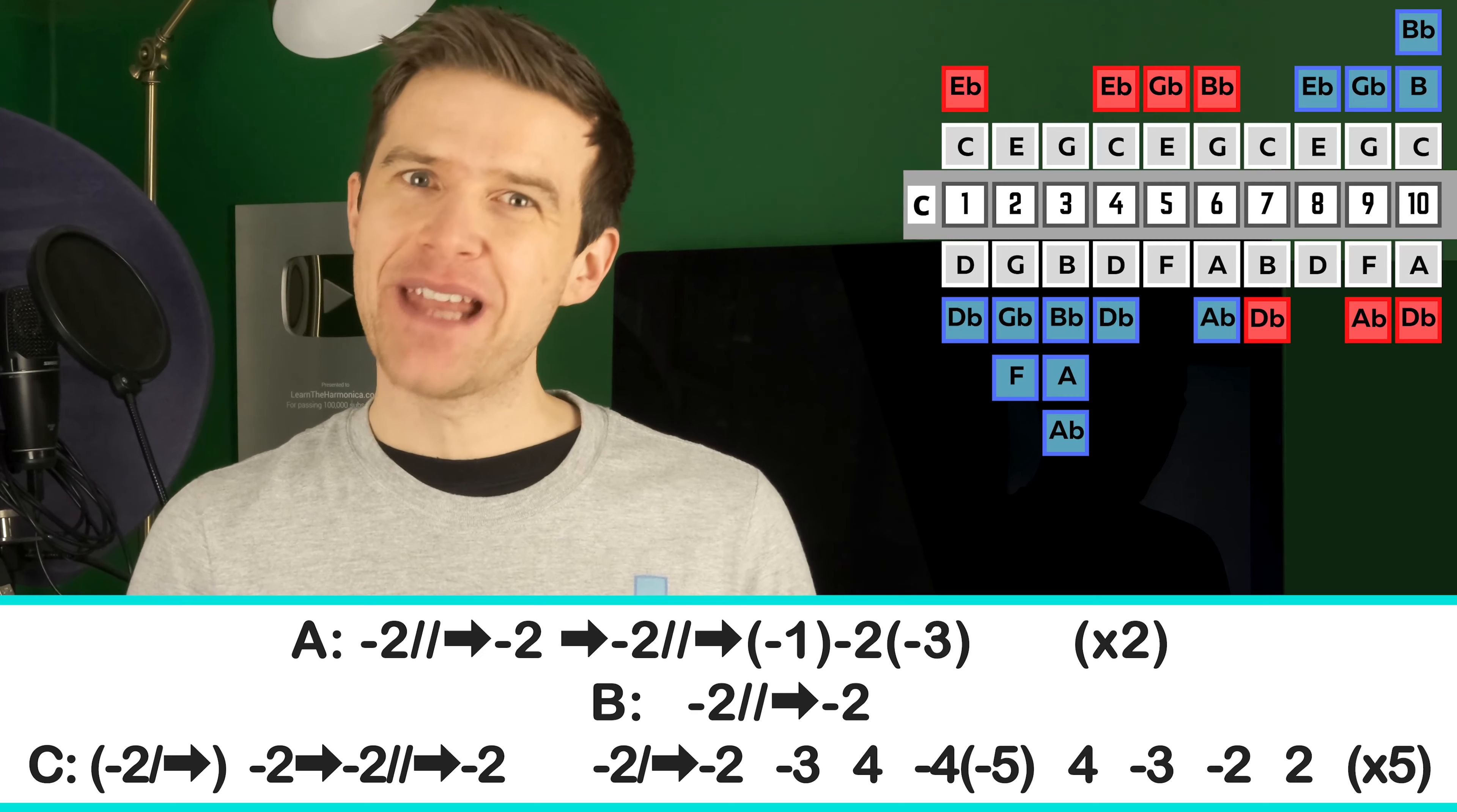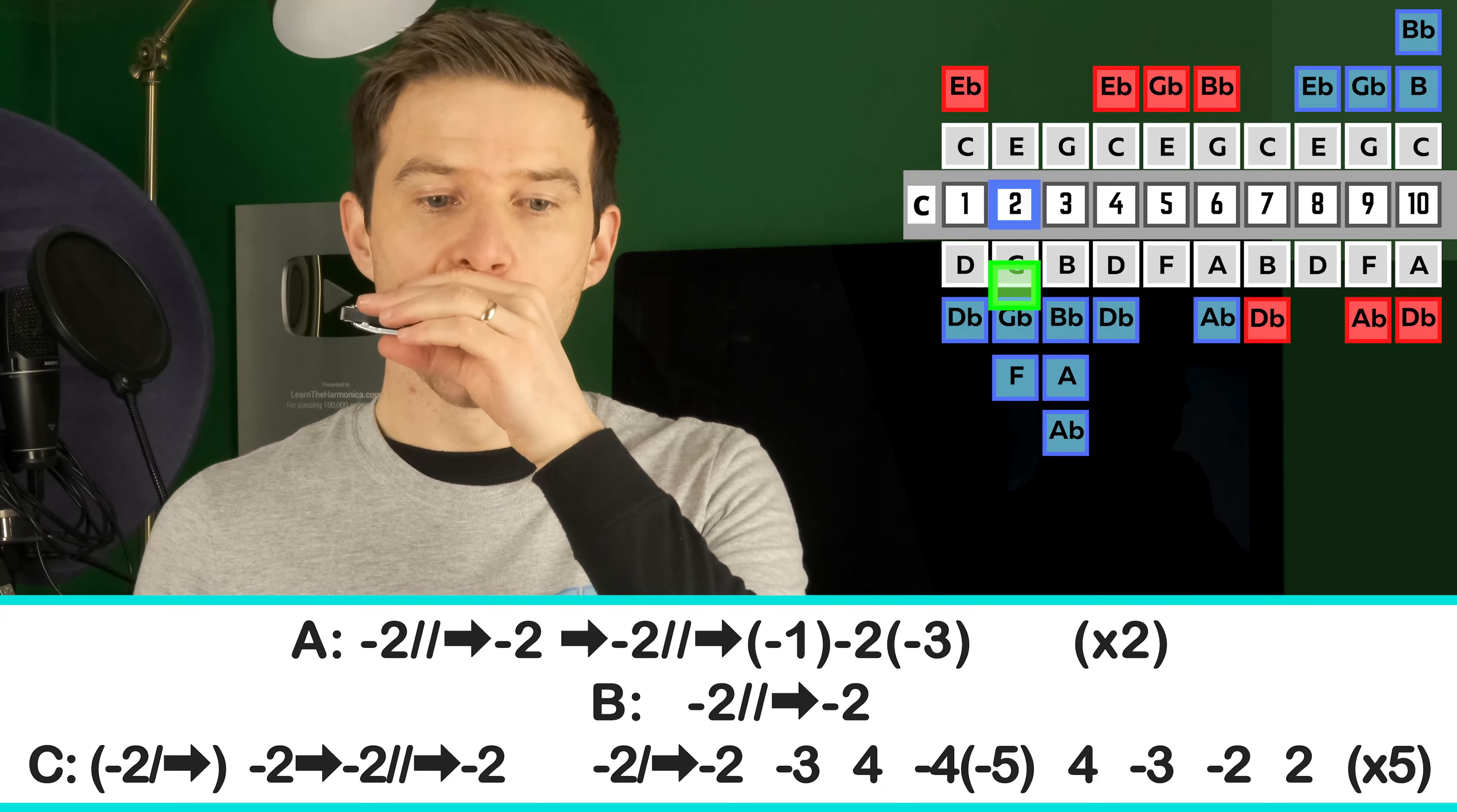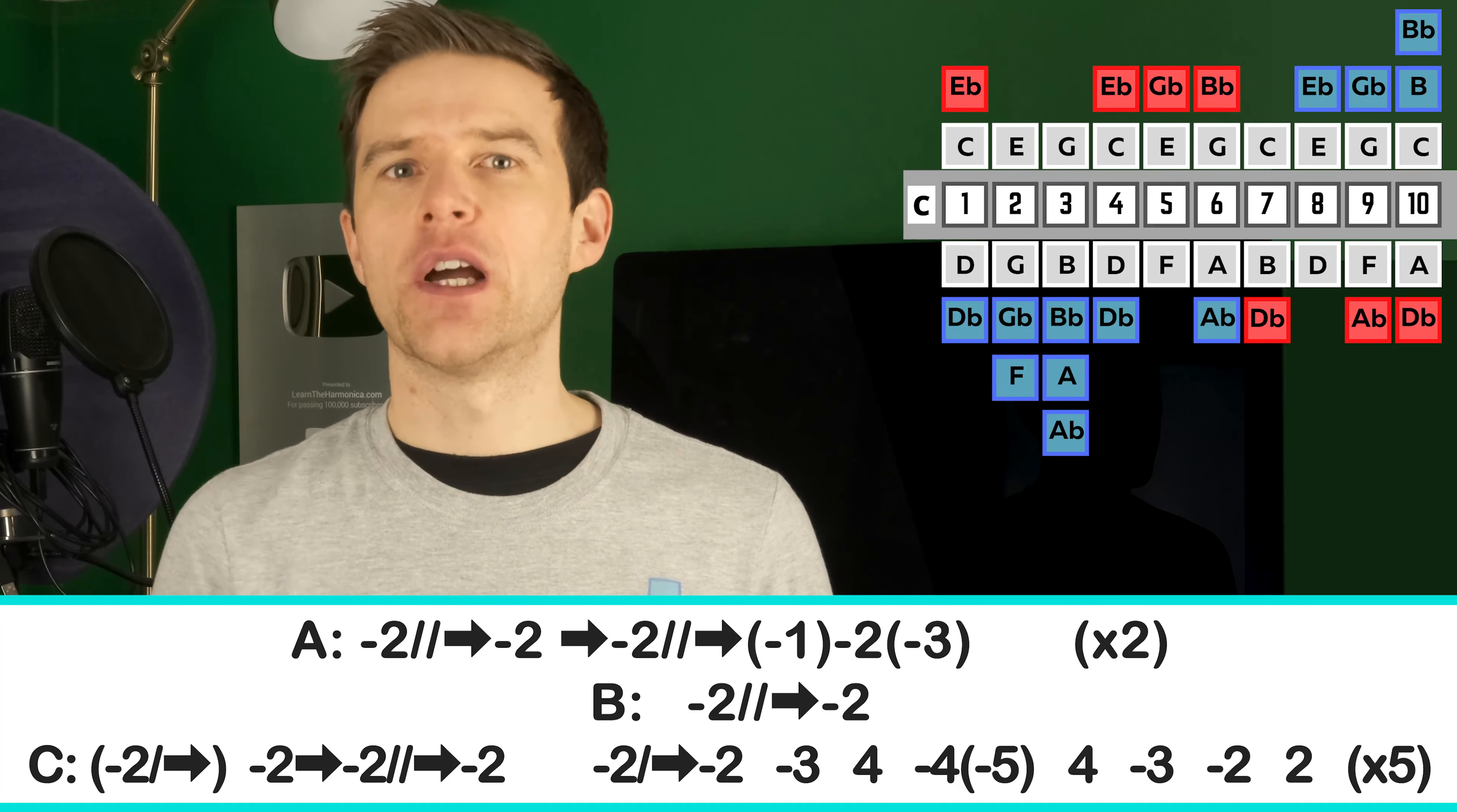Probably again, bending a little bit into that first two-draw. And on the four-draw, maybe hitting the five as well. You know, that rough sound, that kind of combination of two notes called a double-stop. But it does that whole thing, line C, five times. So you've got that through five times.